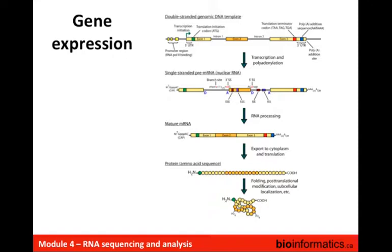This region of the genome gets transcribed into a single-stranded pre-mRNA molecule which still has the introns intact. There are additional features on that pre-mRNA molecule that allow the splicing machinery to recognize where the exons start and end and where the introns need to be removed. Once this RNA processing occurs, you have a mature mRNA that's been capped and polyadenylated, and the exons have been assembled. This thing will get exported from the nucleus into the cytoplasm to be translated into protein, which will then be folded.